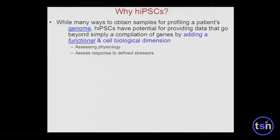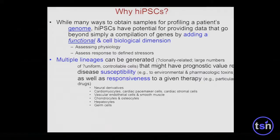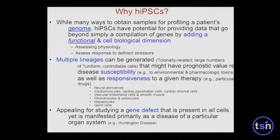For those who do genomic profiling, some ask why not just profile the genome without making IPS cells. When you make an IPS cell, in addition to genetic information, you get a functional cell biological dimension you wouldn't get just by looking at the genome. You can get multiple lineages, sometimes clonally related, often in large numbers, to understand disease susceptibility. You can also understand why a defect present in every single cell causes a neurologic disease rather than a kidney disease — for example, Huntington's disease.